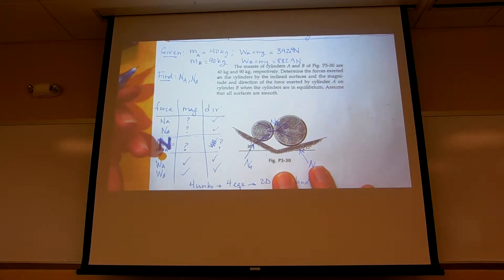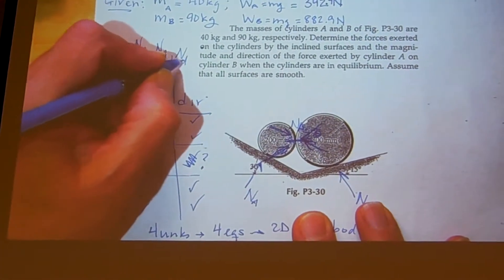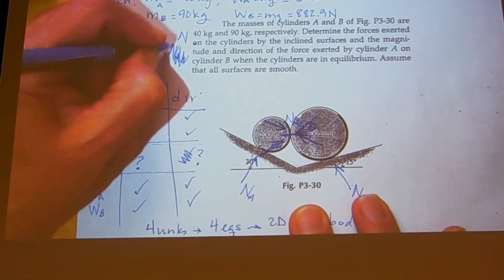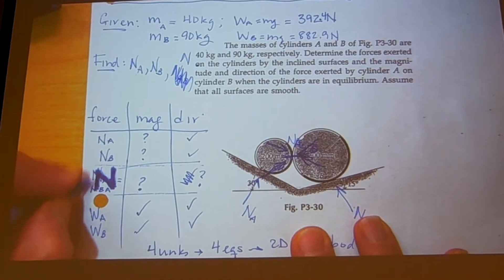So going from A on B, I would call it NAB, but you guys might call it something different. But I'm just going to call it N now, because we reduced it to one variable of N.